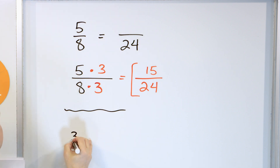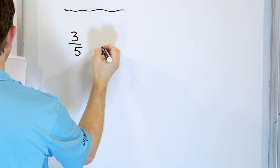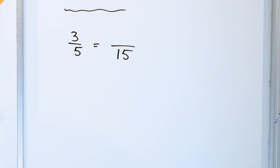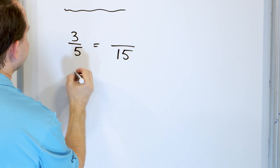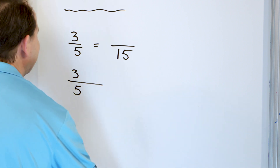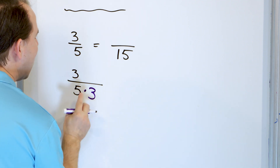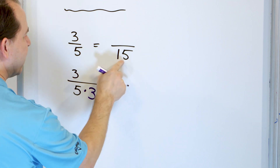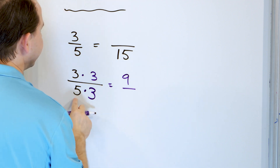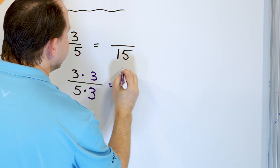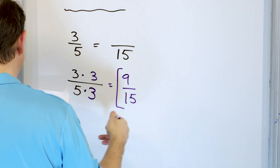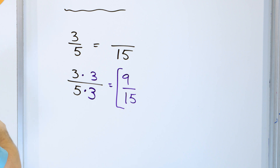Let's take a look at the fraction 3/5, and we're going to say that we have an equivalent fraction with 15 in the denominator. So we take our fraction 3/5 and we can multiply top and bottom by anything we want — but we know we need to multiply by 3. Why? Because 5 times 3 is 15, and that's what we're trying to get to. So 3 times 3 is 9 on the top, and 5 times 3 is 15 on the bottom. The answer is that 3/5 of a pizza is exactly the same amount as 9/15 of a pizza.